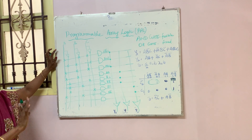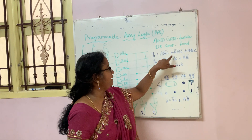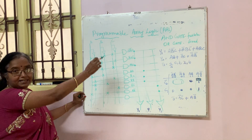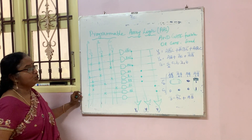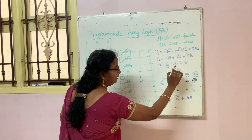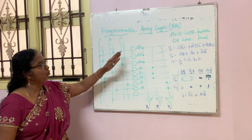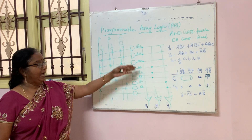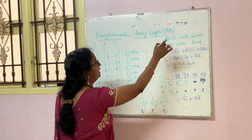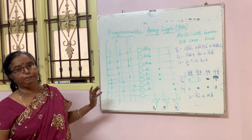So this is Programmable Array Logic - a standard circuit design approach. Currently we are using three variables A, B, C. If you are going to have four variables, you would add one more AND gate with D and its NOT gate D bar, then reduce and draw the circuit accordingly. In PAL, both AND gates and OR gates are used, where AND gates are fusible and OR gates are fixed. In the next class, we will see about Programmable Logic Array, that is PLA, and I will explain the difference between PAL and PLA. Thank you, students.